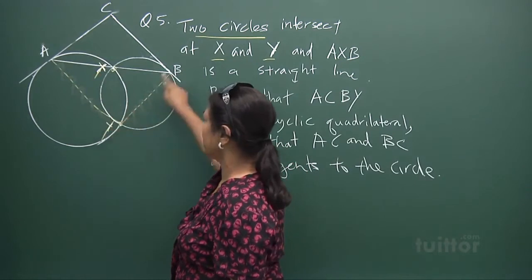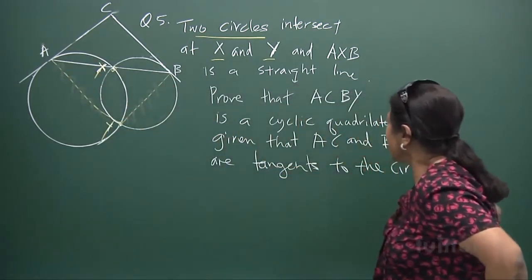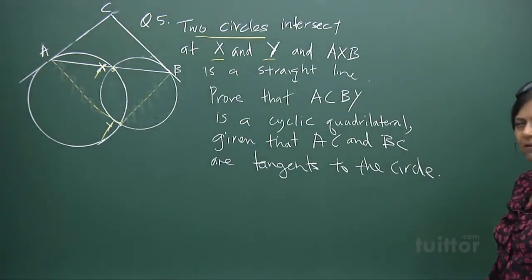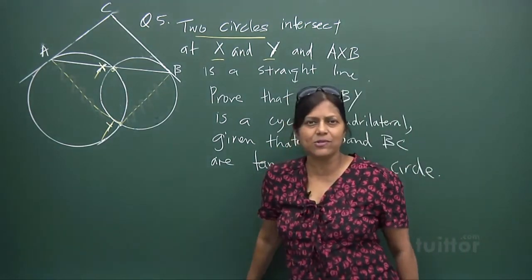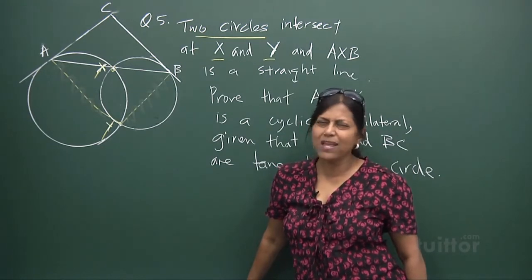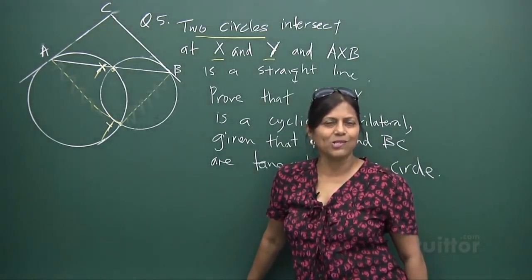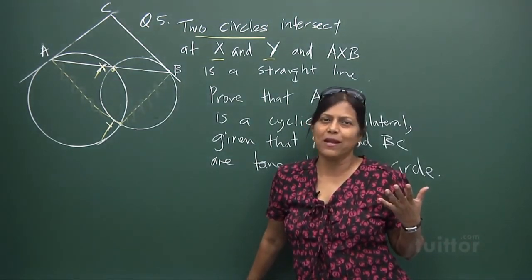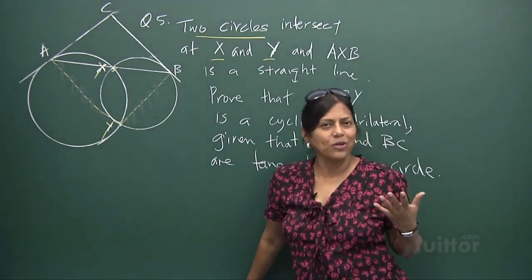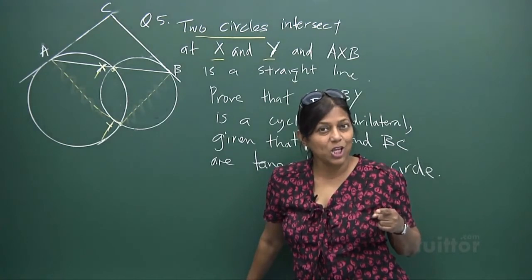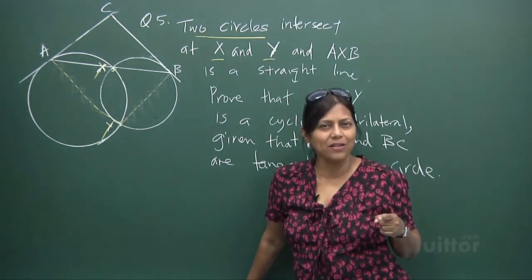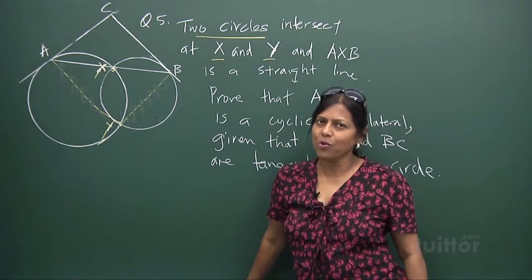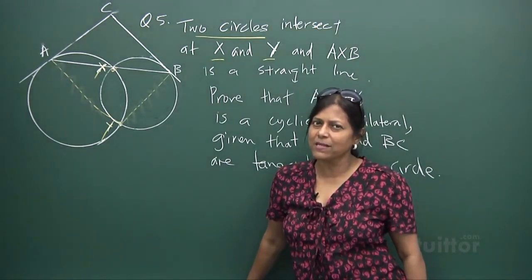Given that AC and BC are tangents to the circle, what do you know? How do you think out of the box to solve this problem with no angle information given? You have to create your own angles. See if they are equal to 180 degrees — remember the cyclic quadrilateral property: opposite angles are equal to 180.